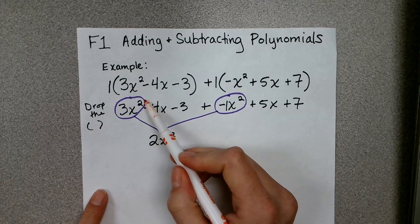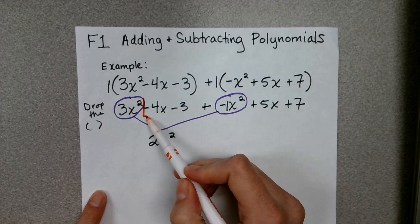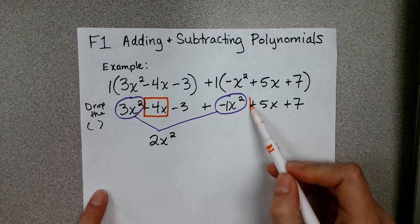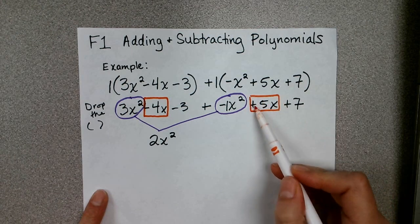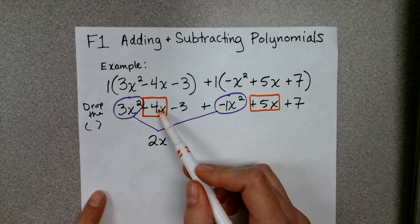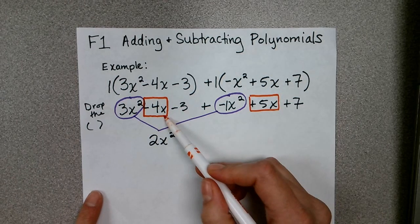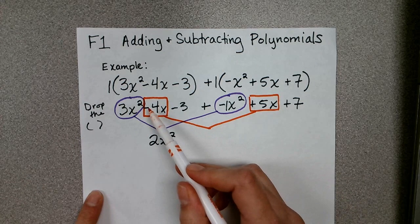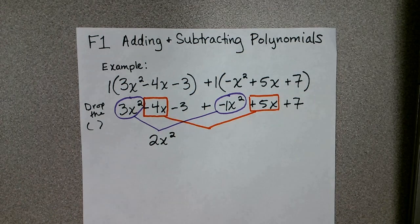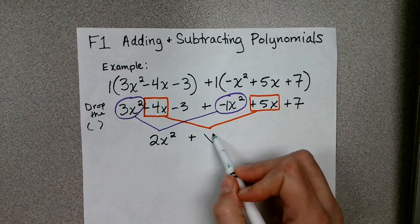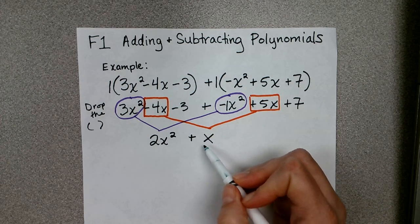Now again, I have a color to use, but you could just use a different shape, put a box around negative 4x and a box around positive 5x. Notice that I included the sign in the box because that is part of the term. So now I know that I have 5x here and then I'm subtracting 4x there.